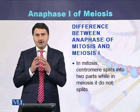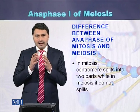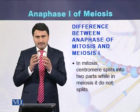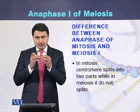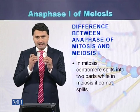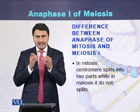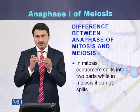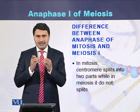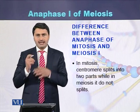In mitosis, the centromere splits into two parts, while in meiosis 1, the centromere does not split into two parts.